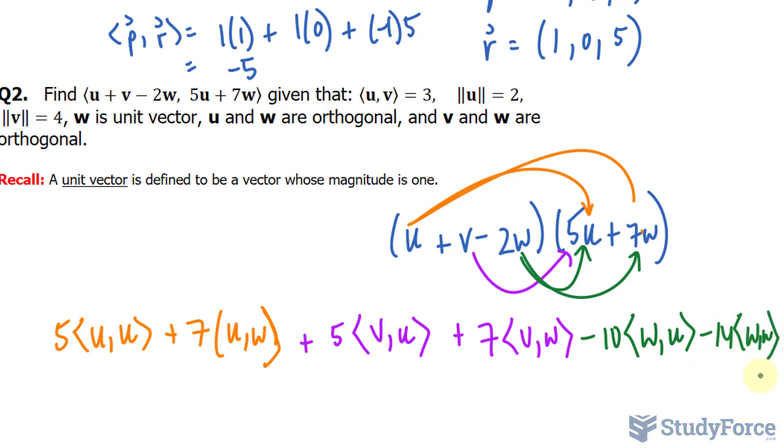Now, using the hints that they've given us in the question, we can actually figure this out. We are told that the norm of u is equal to 2. The norm of u is the same thing as saying the inner product of u and u raised to the power of half. That number is equal to the following expression. If I square both sides, I end up with that part: 5 times 4.